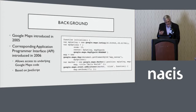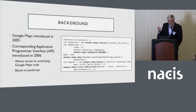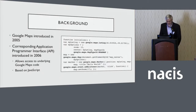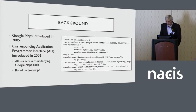The API allows access to the underlying Google Maps code, and it's all based on JavaScript. The code illustrates a little bit of the JavaScript used to call the Google Maps API. You can see things like zoom level and the addition of a marker on the map.